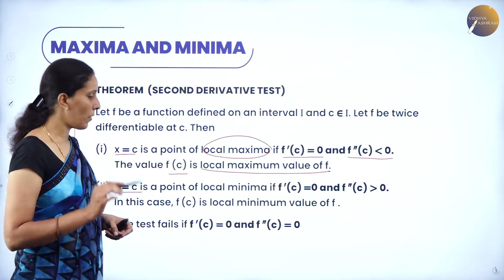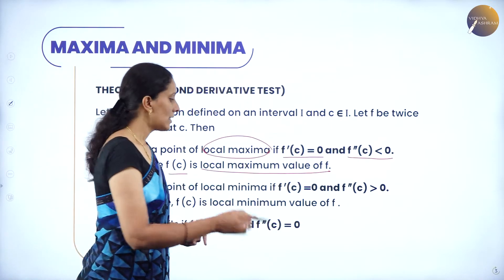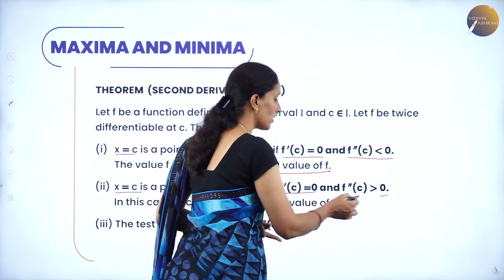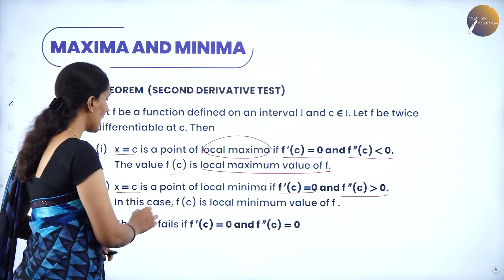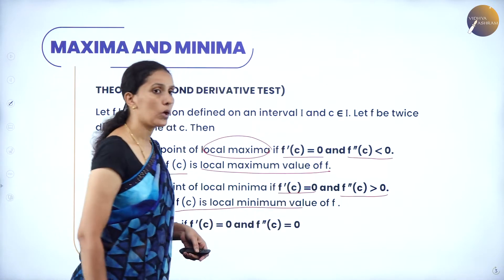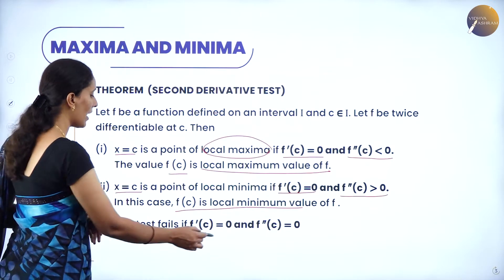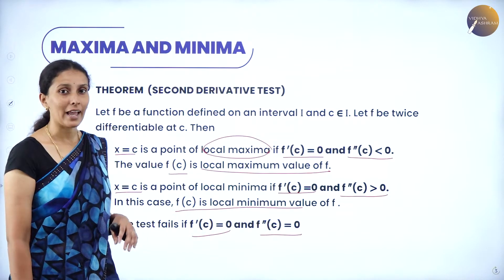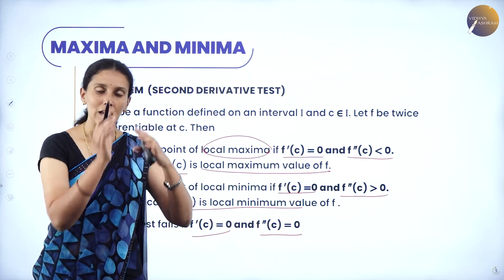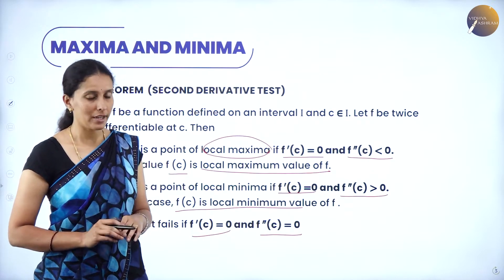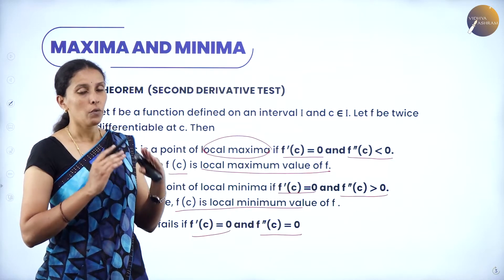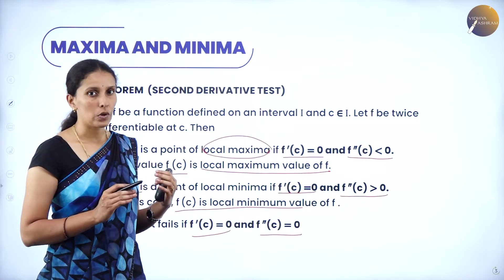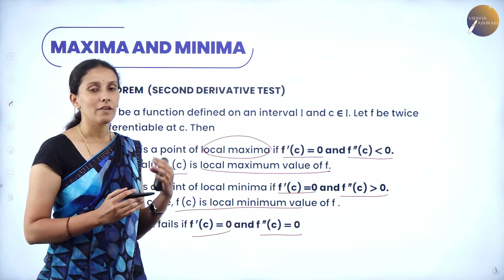Similarly, if x = c is a point of local minima such that f'(c) = 0 gives the critical point, and the second derivative is positive, then f(c) has a local minimum value. If f'(c) = 0 and f''(c) = 0 as well, then the test fails. We go back to the first order derivative test and analyze whether the function changes sign from positive to negative (local maxima) or negative to positive (local minima).